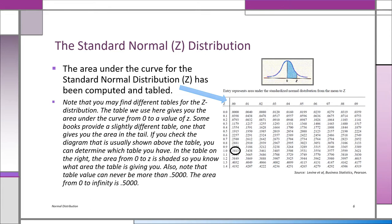Underneath the z column you see row headings: 0.0, 0.1, 0.2, and so on. To find the area from 0 to 1.00, go to row 1.0, then use the column heading 0.00 for the second decimal place. The answer, highlighted in the table, is 0.3413. If you ask for zero to minus one, by symmetry the answer is also 0.3413 — meaning 34.13% of the population is within one standard deviation of the mean on each side.